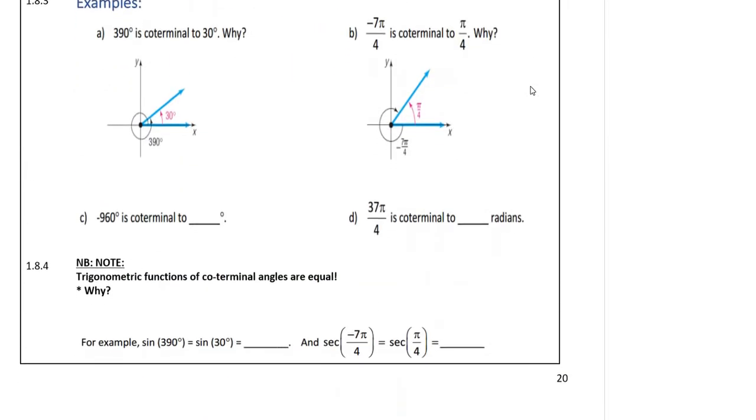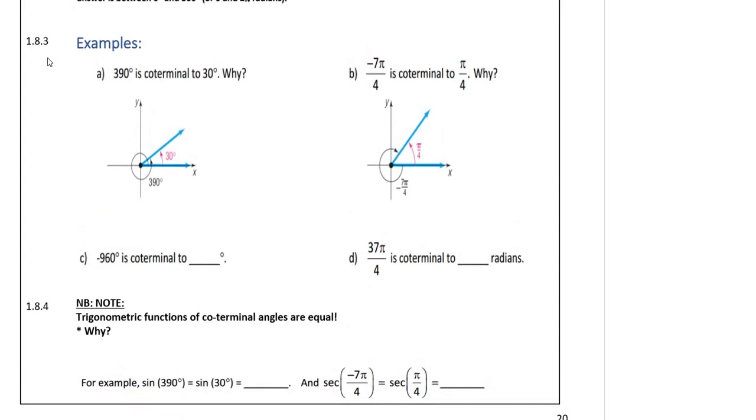So this 30 degrees and this 390 degrees are co-terminal because this 390 is right around to get 360 and then back to another 30. So it must definitely have the same terminal. Therefore, if we add 360 to an angle or 2π if we do radians, we must get a co-terminal angle.